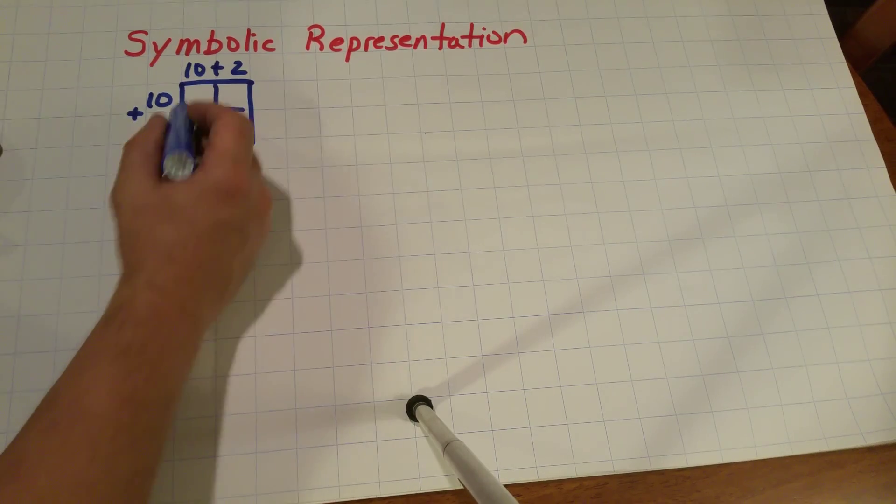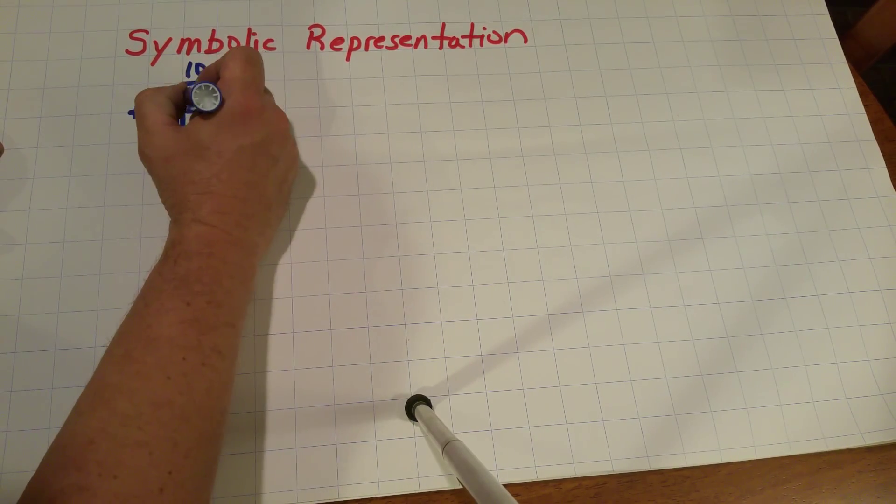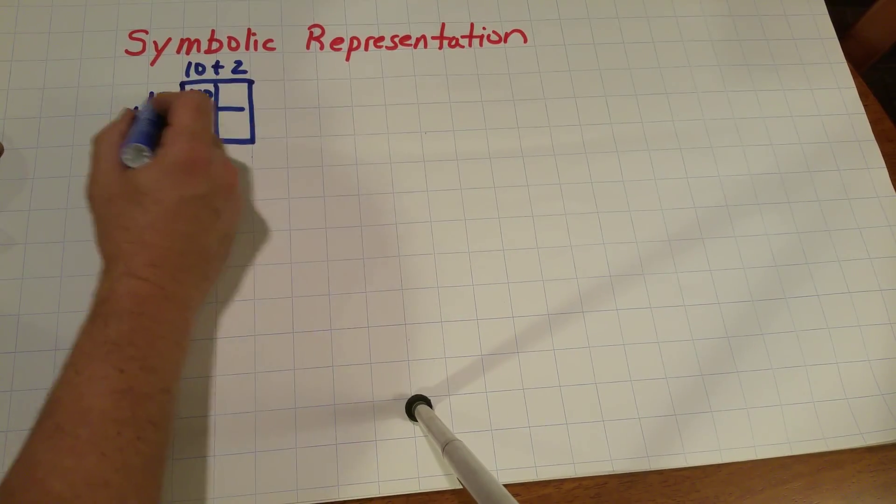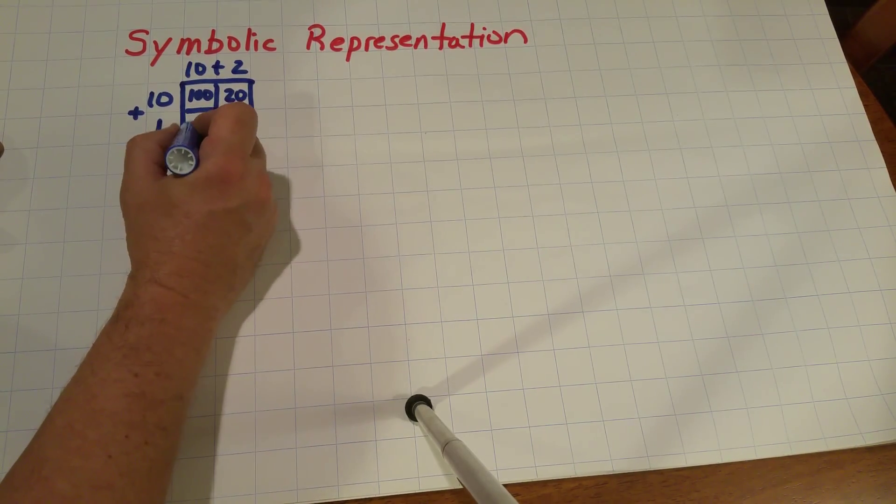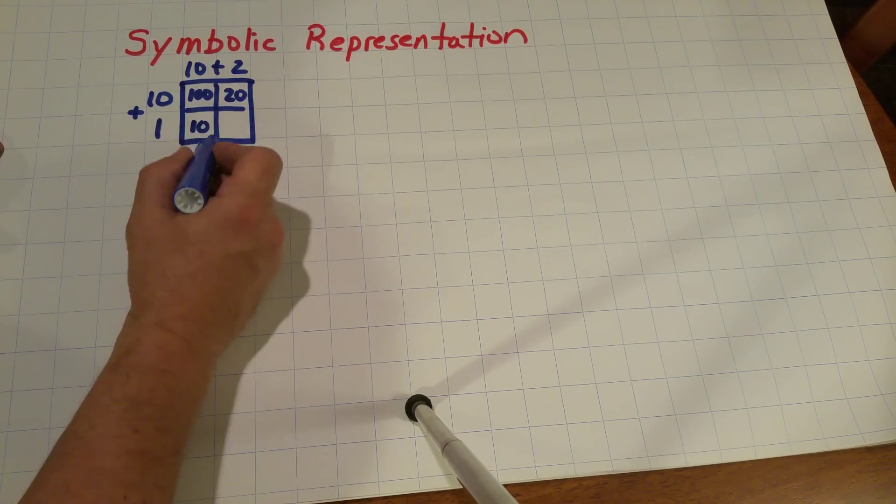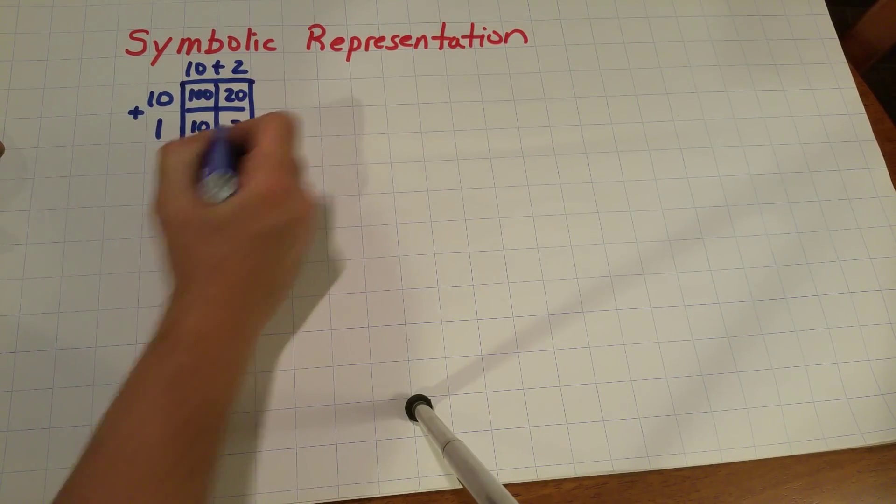The 10 multiplied times the 10 will give a 100, the 10 multiplied times the 2 will give a 20, the 1 multiplied times the 10 will give a 10, and the 1 multiplied times the 2 will give a 2.